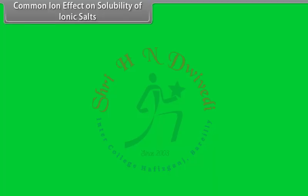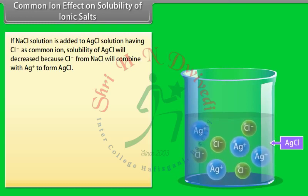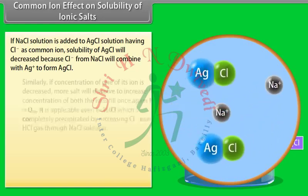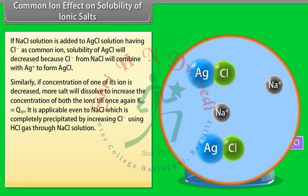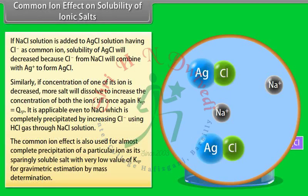If NaCl solution is added to AgCl solution, Cl⁻ acts as the common ion. The solubility of AgCl decreases because Cl⁻ from NaCl combines with Ag⁺ to form AgCl. Conversely, if the concentration of one ion decreases, more salt will dissolve until Ksp = Qsp again. The common ion effect is also used for almost complete precipitation of a particular ion as a sparingly soluble salt with very low Ksp, useful in gravimetric estimation.